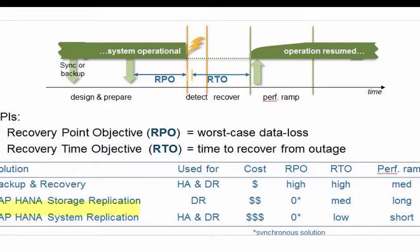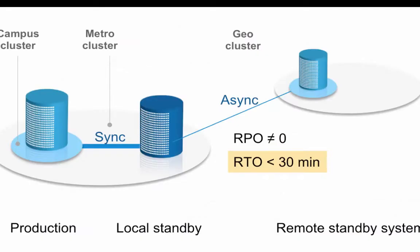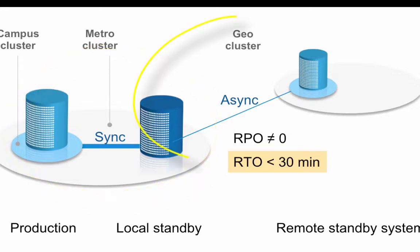Our third option is system replication. This involves having a shadow system up and running that receives any update to the production system as it occurs. Should the primary site fail, then it can take over immediately. As a result, we have a zero RPO and a low RTO — basically the time it takes to switch the IP addresses or a DNS entry from the primary to the secondary site. It is possible to set up multi-tiered system replication as well. The third system could be well outside the data center, maybe even in a different part of the world. The replication in the metro cluster would be synchronous, and in the geocluster, the remote standby, asynchronous.